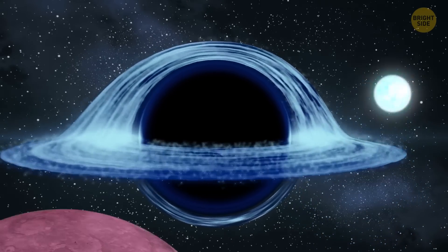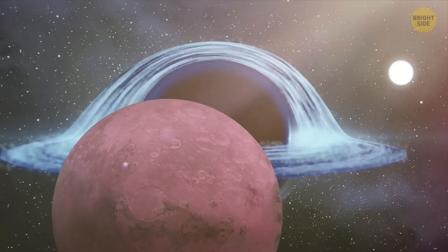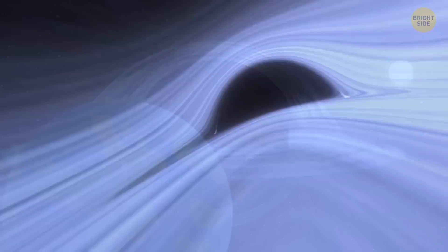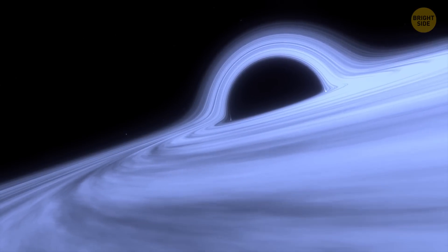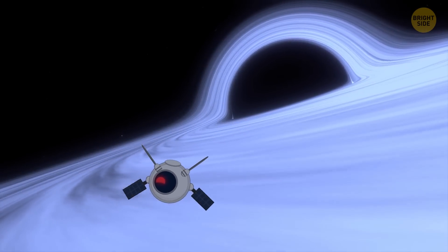So our destroyed star could have safely existed at this distance. Moreover, planets can live at this distance. And if there is a suitable source of light and heat somewhere nearby, life can exist on these planets too. But our goal is the singularity. And we guide the meatball, I mean the drone, closer to the event horizon.